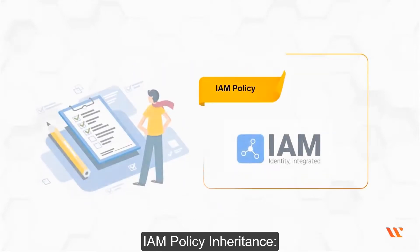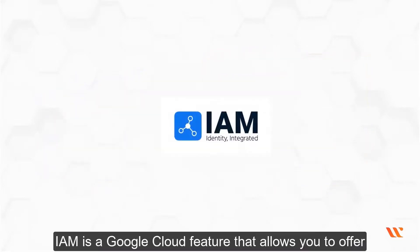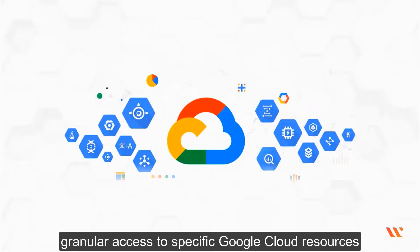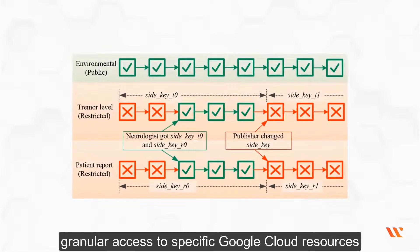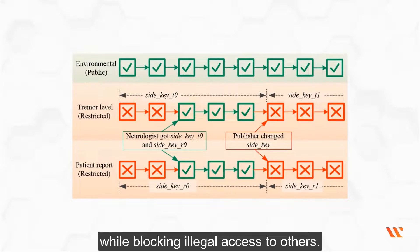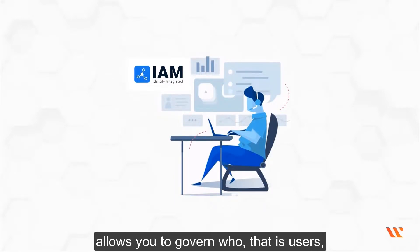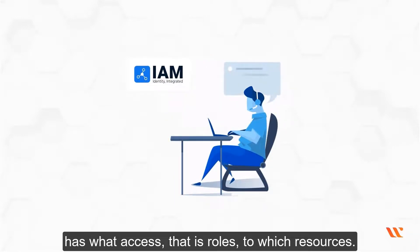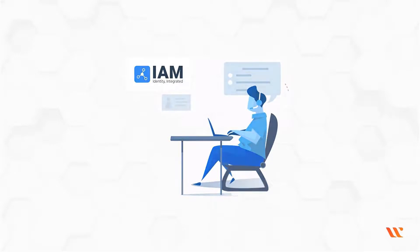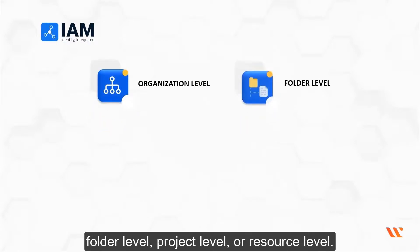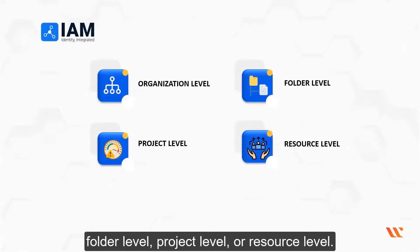IAM Policy Inheritance. IAM is a Google Cloud feature that allows you to offer granular access to specific Google Cloud resources while blocking illegal access to others. Setting IAM policies on resources allows you to govern who has what access to which resources. IAM policies can be specified at the organization level, folder level, project level, or resource level.